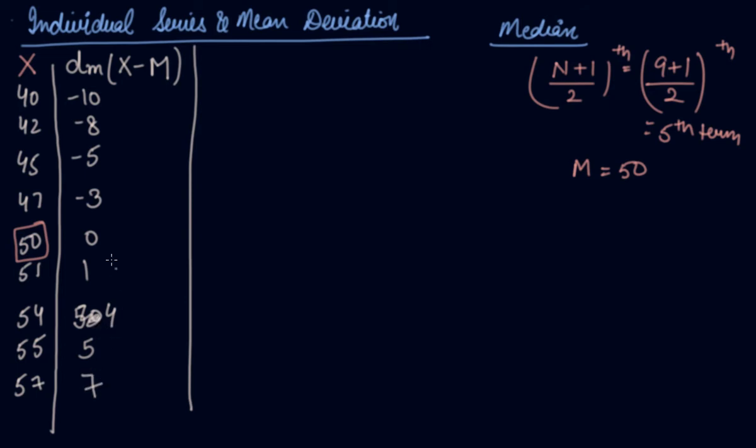What you do is take the mod here, which means you ignore the minus sign and add all the values. You get the answer in plus. So by adding all these, you get the answer 43. You've got the summation dm, that is deviation from median.